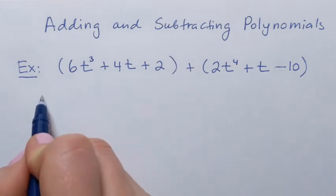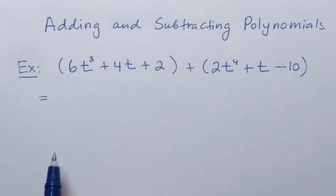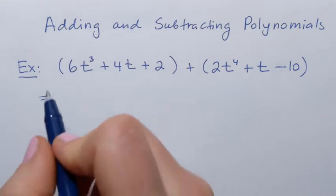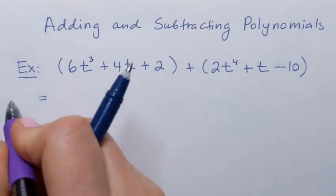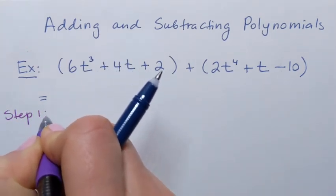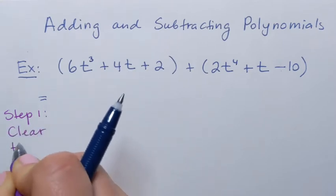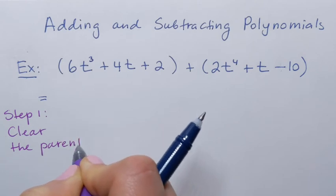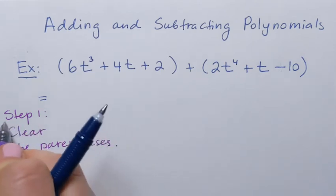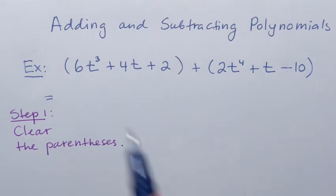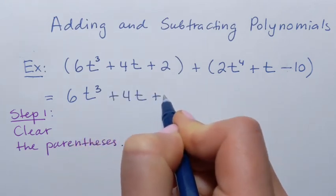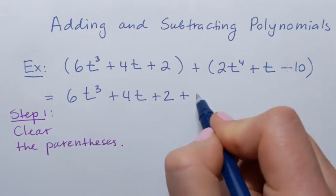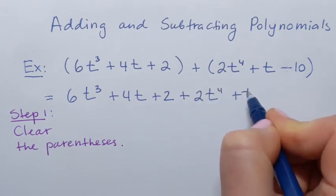To add polynomials, it's actually the easiest operation. I'll just drop the parentheses without changing anything, and then I'll combine like terms. So step one: clear the parentheses. I'm literally rewriting my two polynomials with no parentheses, keeping the plus sign between them — 2t to the fourth power plus t minus 10.